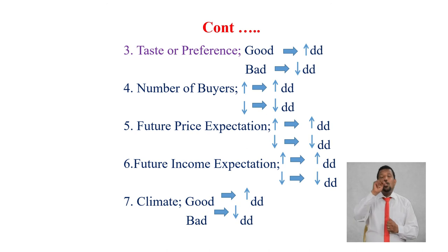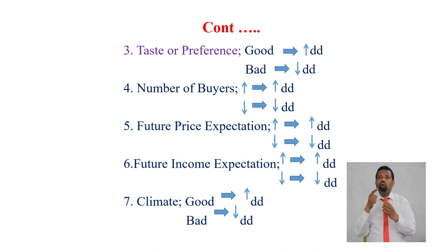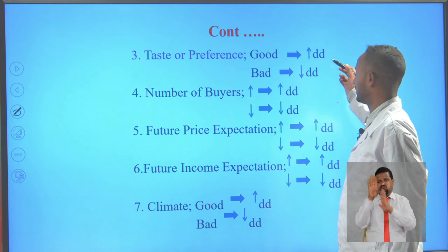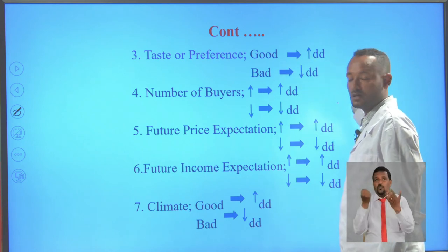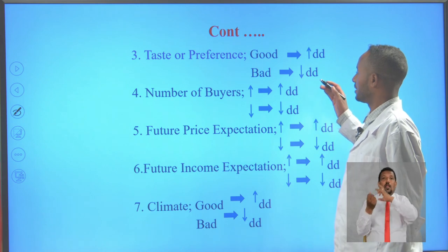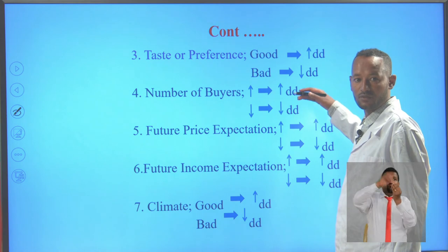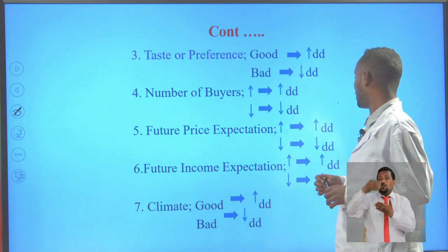Another non-own-price determinant of demand is taste or preference. Good taste or preference increases demand for a good and shifts the demand curve to the right, while bad taste decreases demand and shifts the curve to the left. Another determinant is the number of buyers — with an increase in the number of buyers, demand increases, and with a decline in the number of buyers, demand declines.